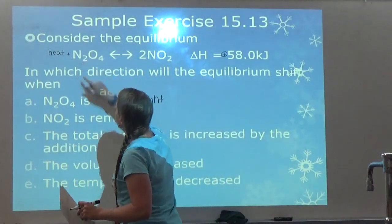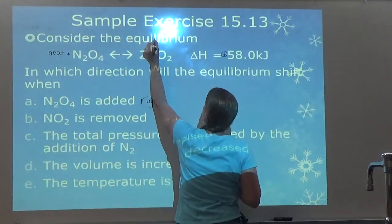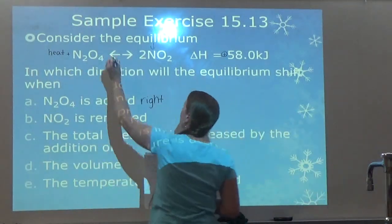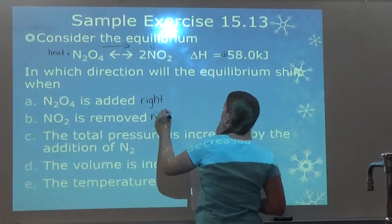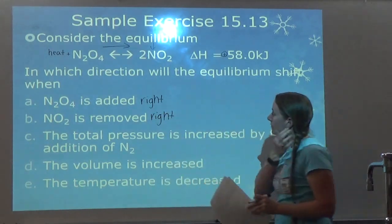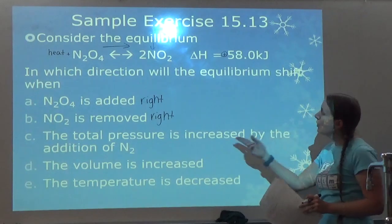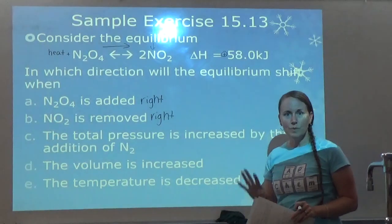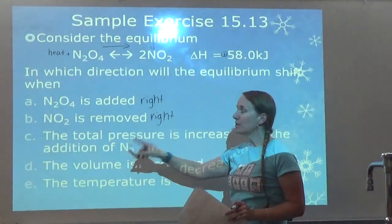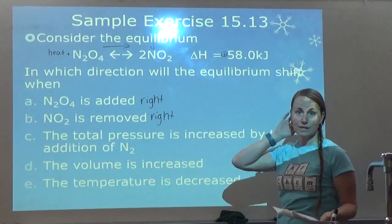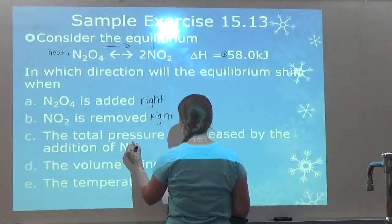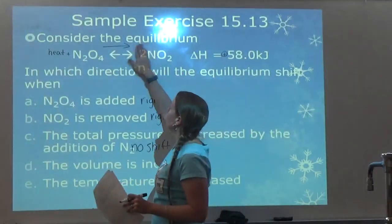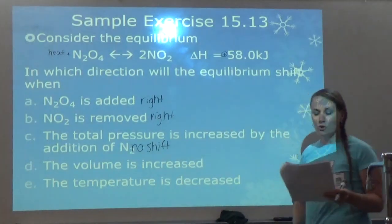Next: NO2 is removed. If I take away NO2 and decrease that amount, it wants to make more, so again it's going to shift to the right. Part C: the total pressure is increased by the addition of N2. Remember, changing pressure with volume and changing pressure with an inert gas are two different things. There is no shift if you change pressure with an inert gas because it doesn't actually change the partial pressure.